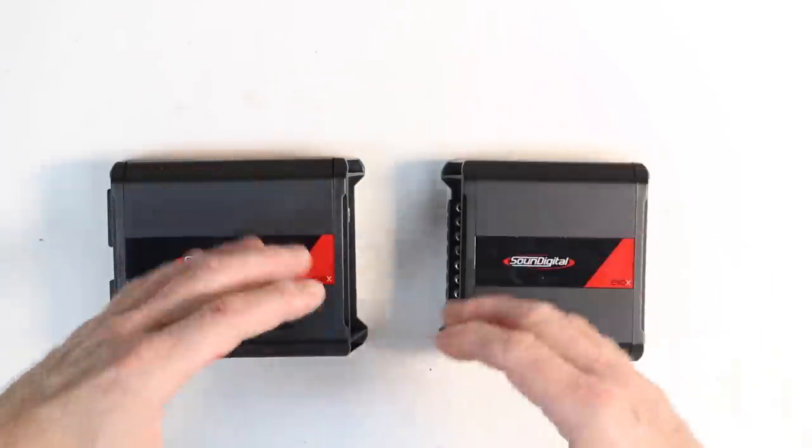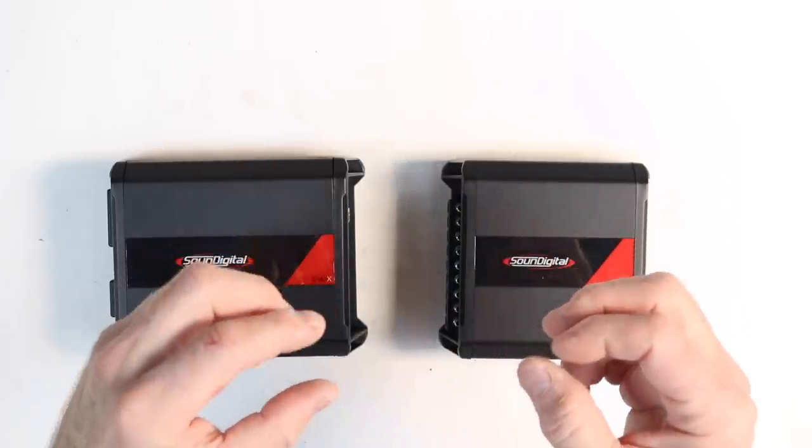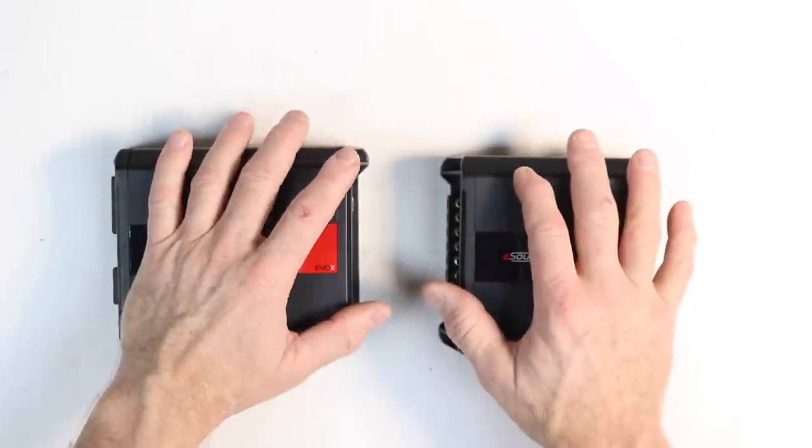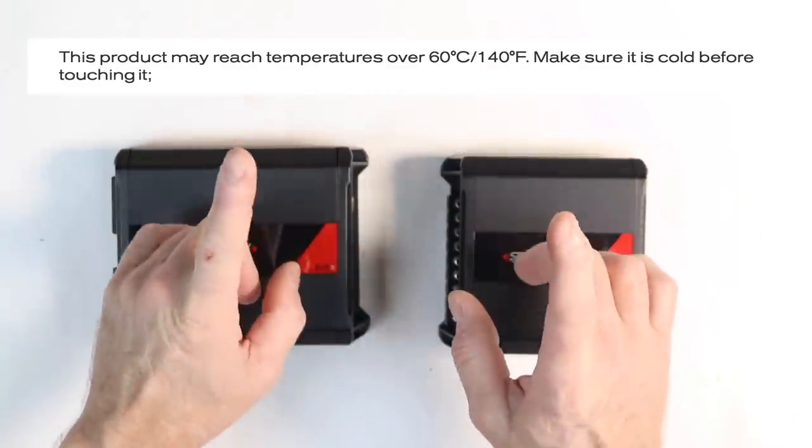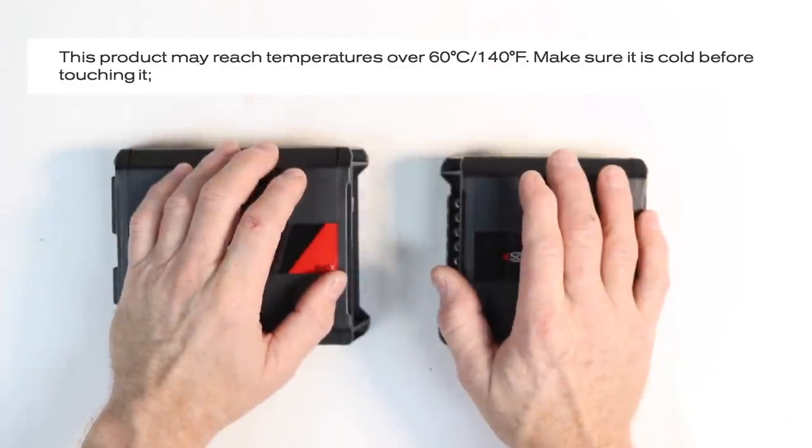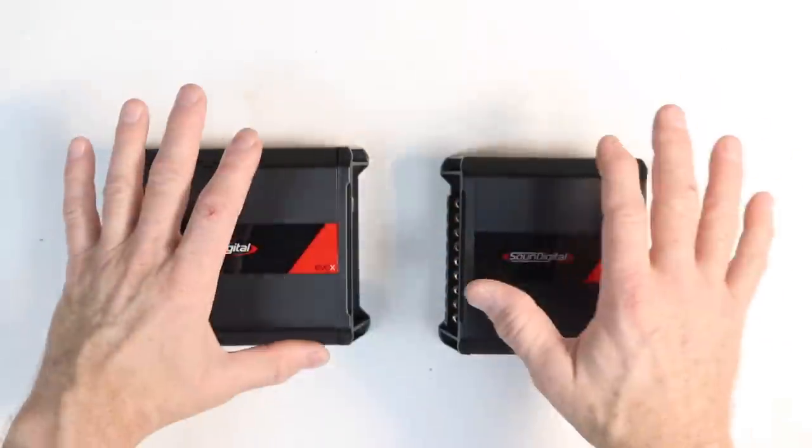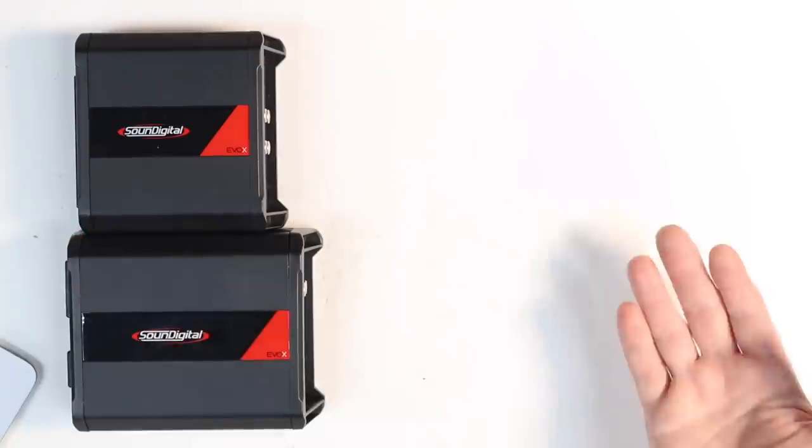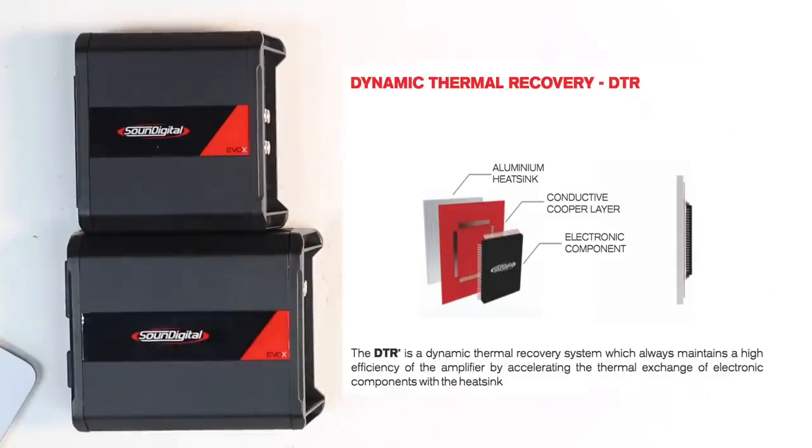With small amplifiers one of the biggest questions we get is my amplifier gets hot. In the owner's manual they talk about that. These are designed to get up to and sometimes over 140 degrees. When mounted make sure there's some ventilation and that leads us to the first technology built into both of these amplifiers which is DTR or Dynamic Thermal Recovery. DTR is a system which always maintains a high efficiency of the amplifier by accelerating the thermal exchange of electronic components with the heat sink. And it's patented.